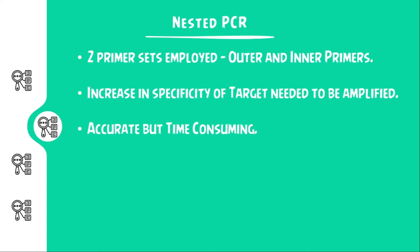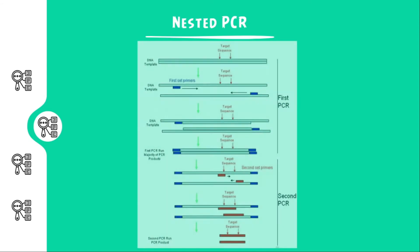This method increases the specificity of the target gene that needs to be amplified. It is a very accurate method, but it is time consuming. This is a pictorial representation of nested PCR where the first reaction produces the standard strand while the second reaction produces the target strands.